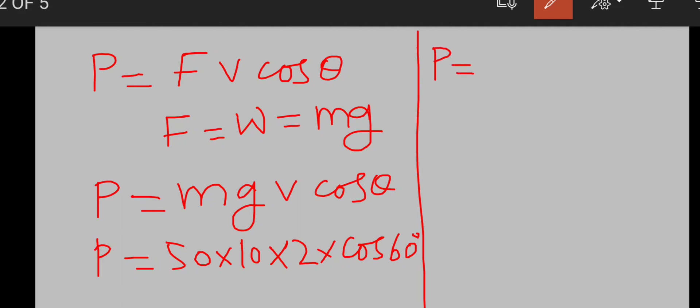equal to 50 into 10, which is 500, into 2. Cos 60 is equal to 1 upon 2, so by putting the value of cos 60, the 2 will get cancelled with 2, so the power obtained is 500